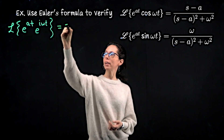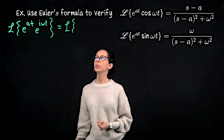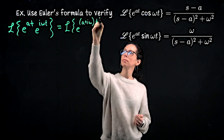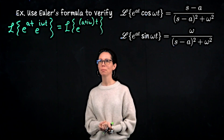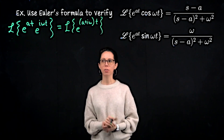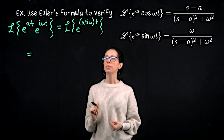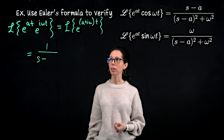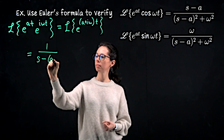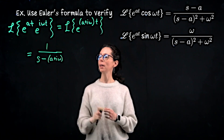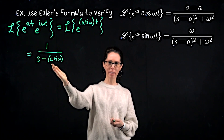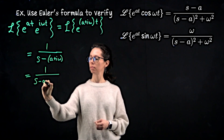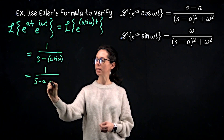Given that cosine omega t and sine omega t are the real and imaginary components of the complex exponential e to the i omega t, let's take e to the i omega t, multiply it by e to the at, and transform that. This is the product of two exponentials, so we combine them: the Laplace transform of e to the complex number a plus i omega times t. This is just the Laplace transform of an exponential, so it's 1 over s minus the complex number a plus i omega. The real part s minus a pairs with s, and then we have minus i omega.